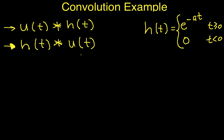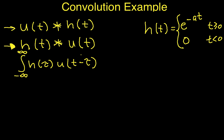The first thing we'll do is write out the convolution integral for h of t convolved with u of t. That's the integral from minus infinity to infinity of h of tau times u of t minus tau d tau. This is the convolution integral for the second expression for convolution.